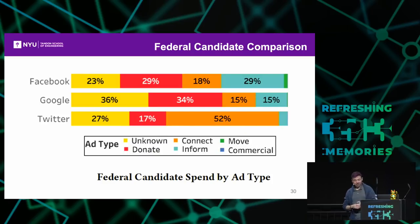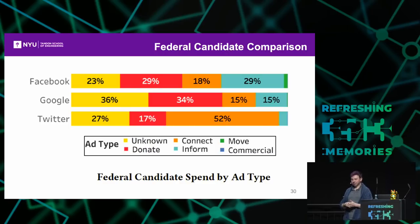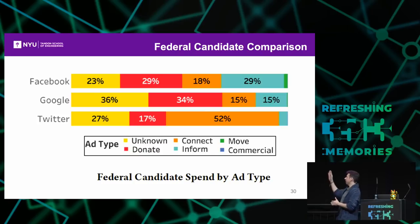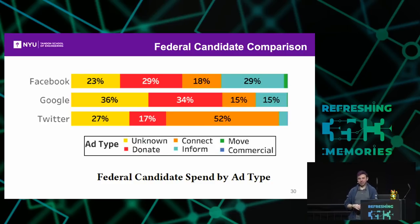We can also look at some spend type by ad type, which shows how the different platforms are used. Facebook's platform looks like it's used more informationally, and also a lot for donations. Google's platform is used a lot more for donations and less for informational ads. It's hard to read much into Twitter's data because it's such a small set, but from what we have, there appears to be a lot more collection of emails and things like that.